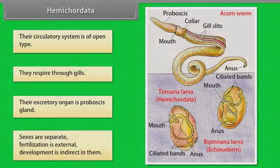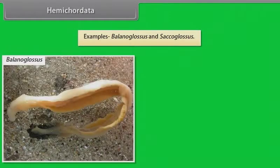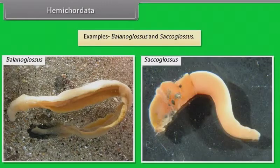Their excretory organ is proboscis gland. Sexes are separate. Fertilization is external. Development is indirect in them. Examples: Balanoglossus and Saccoglossus.